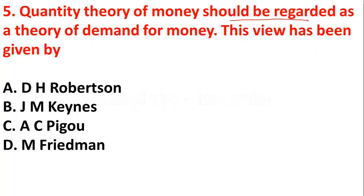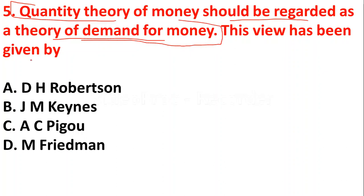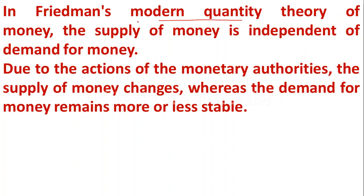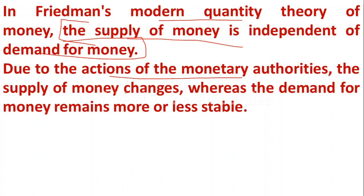The next question: 'Quantity theory of money should be regarded as a theory of demand for money' — this view has been given by — Option A: D.H. Robertson; Option B: J.M. Keynes; Option C: A.C. Pigou; Option D: Milton Friedman. This view was given by Milton Friedman. According to Friedman's modern quantity theory of money, the supply of money is independent of demand for money due to the actions of monetary authorities. The supply of money changes while the demand for money remains more or less stable.